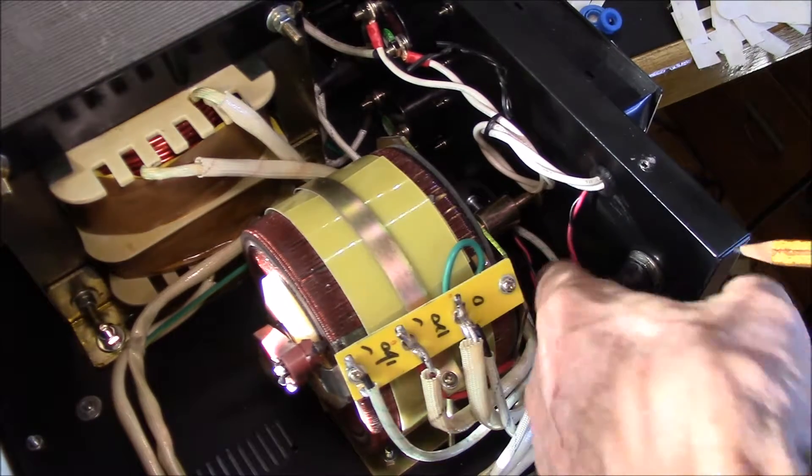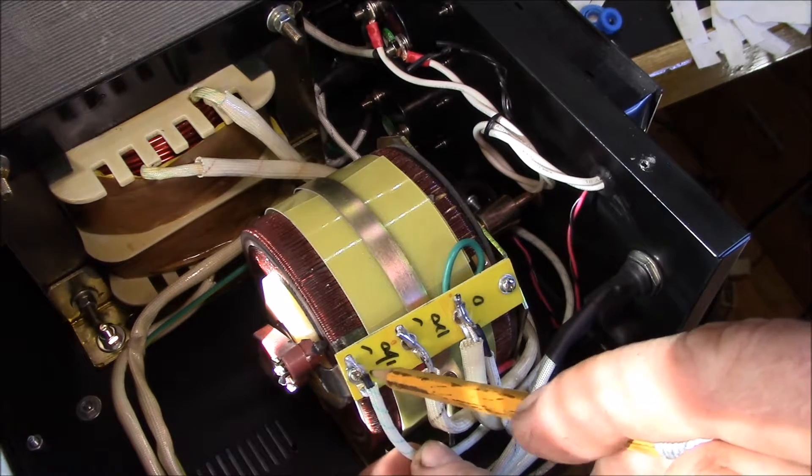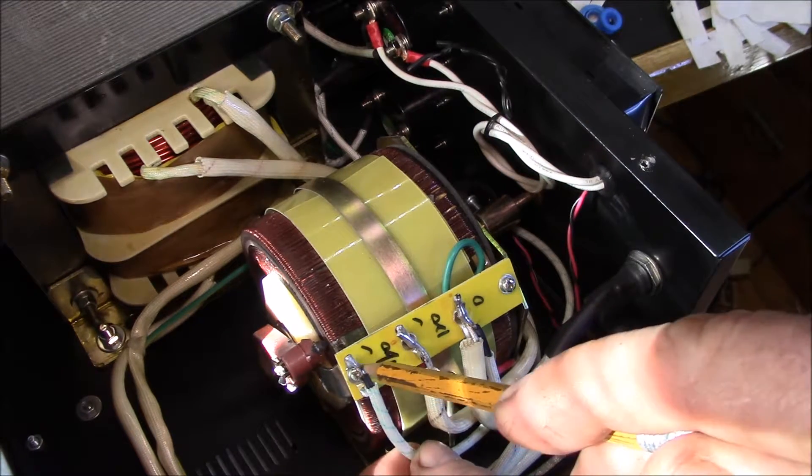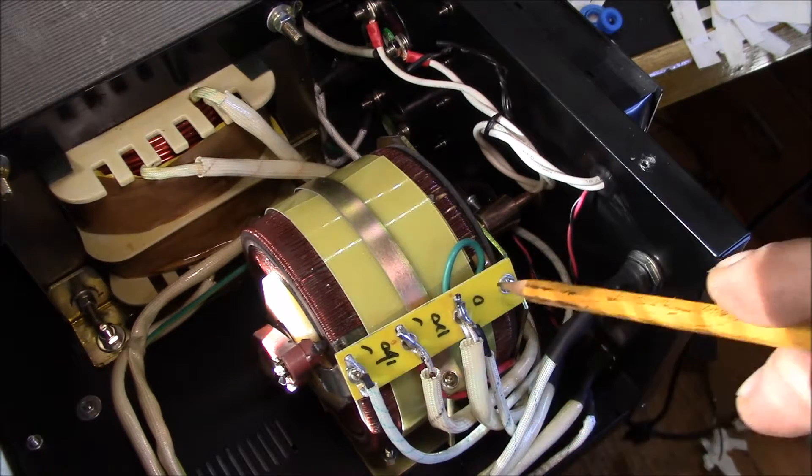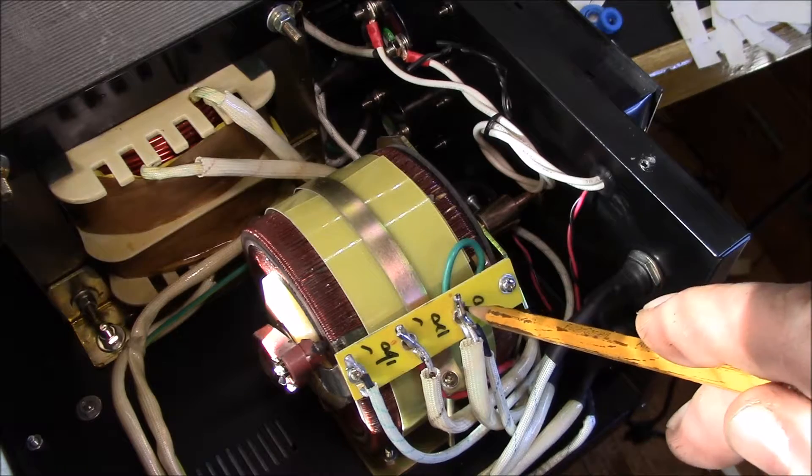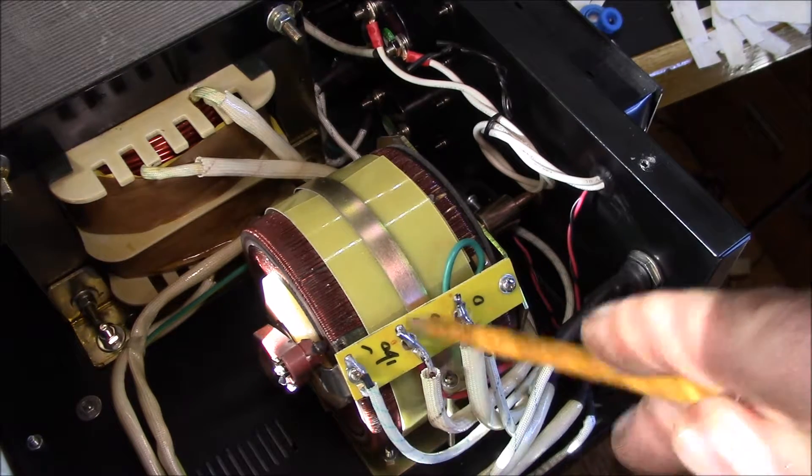So that wire comes off of here, which is the variable tap on the variac. You've got neutral, zero volts; you've got your 120 volt input here; and then this is the variable output.